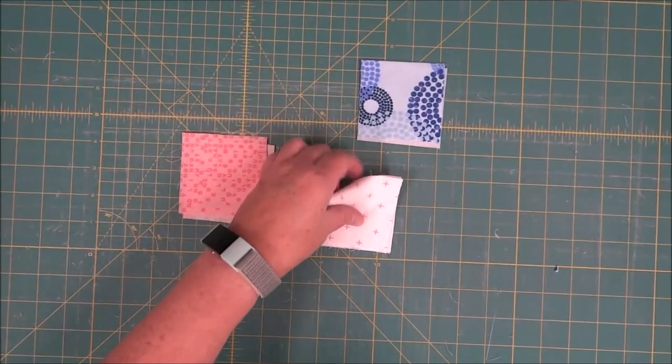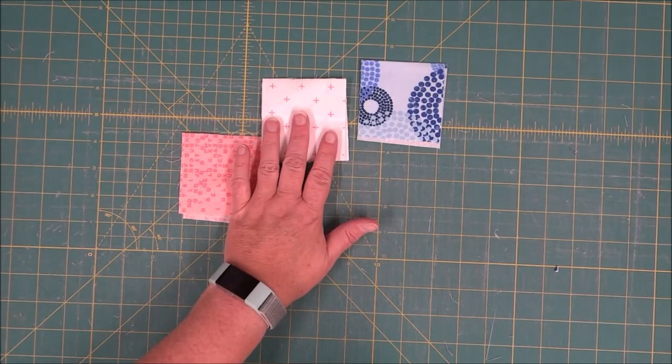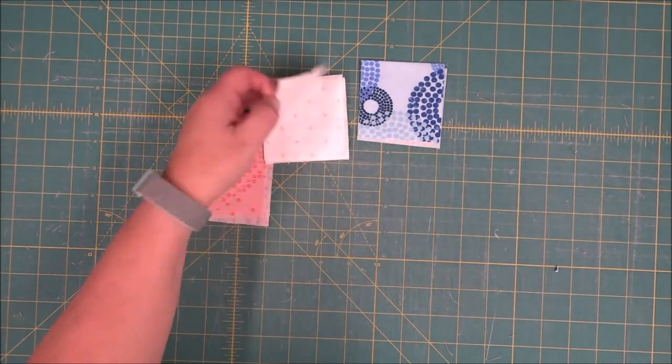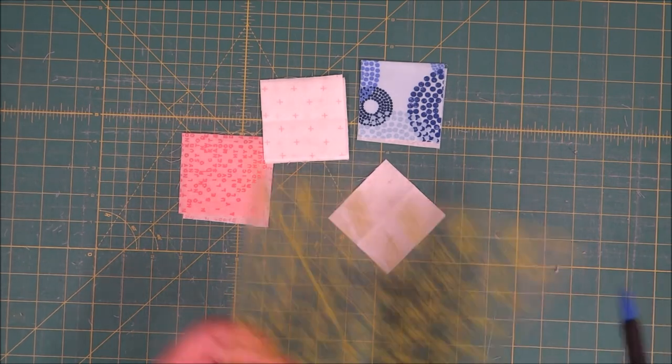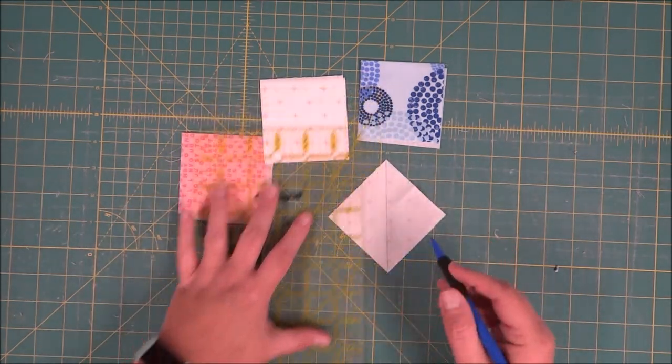For the pinwheel blocks we're making a couple different colors, so I've got all my backgrounds cut and the first thing we want to do is draw a line from corner to corner on the wrong side of the fabric.